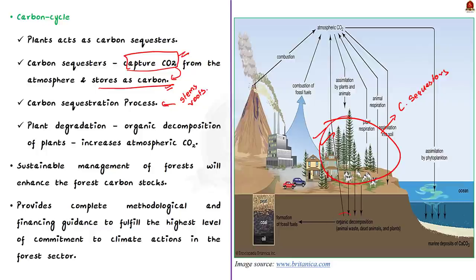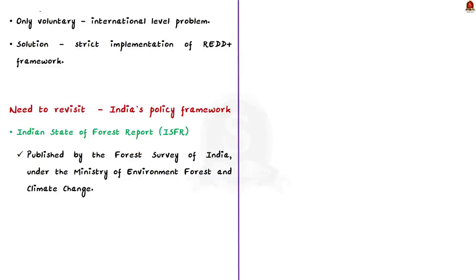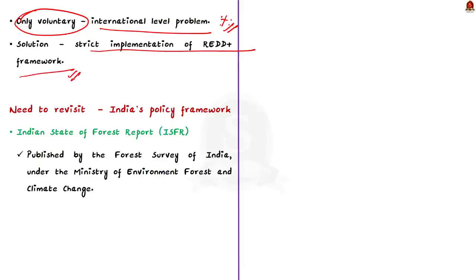Plant degradation — that is, organic decomposition of plants — increases the carbon dioxide content in the atmosphere. The REDD+ framework talks about sustainable management of forests which will enhance the forest carbon stocks. However, although this framework provides complete methodological and financing guidance, it is only voluntary. As a solution, strict implementation of the REDD+ framework must be ensured in order to increase forest carbon stocks.